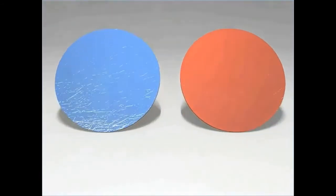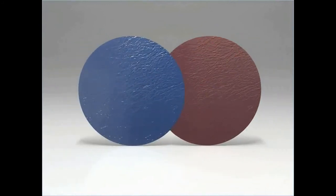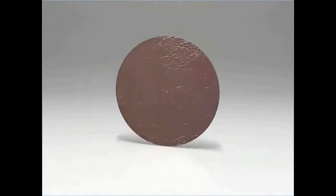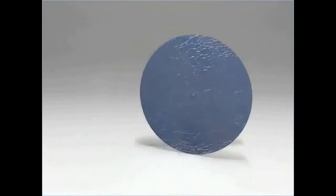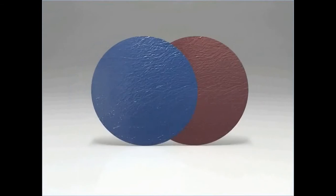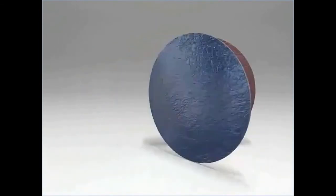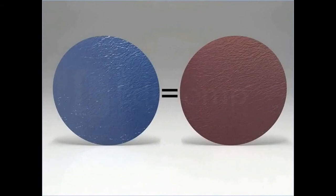Now consider two circles of equal radii. As the circles have the same radii, they coincide with each other and are equal to one another. Looking at this example, you can say things that coincide with one another are equal to one another, which is another axiom proposed by Euclid.